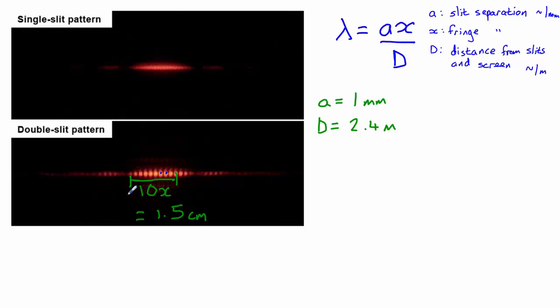So first step here, let's work out what our individual fringe separation is. So this will be x equals 1.5 divided by 10, so 0.15 centimeters.